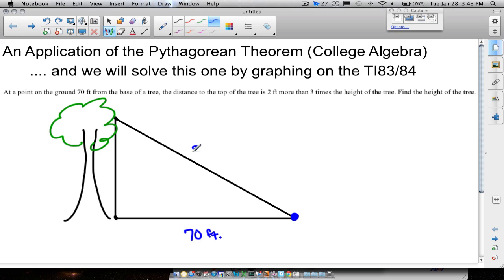Two feet more than three times the height of the tree we can think of as 3h + 2. Three times the height and then it's two more than that. Now the reason why I use the h here is because the question says find the height of the tree. So we're trying to find h. That's the ultimate goal.